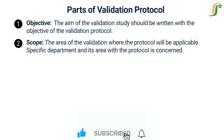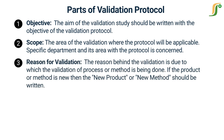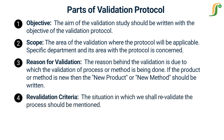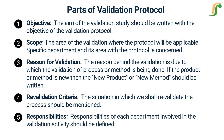The specific department and its area with which the protocol is concerned should be stated. Reason for validation: the reason behind the validation — due to which the validation of the process or method is being done — should be written. If the product or method is new, then new product or new method should be written. Revalidation criteria: the situation in which we shall revalidate the process should be mentioned. Responsibilities: responsibilities of each department involved in the validation activity should be defined.